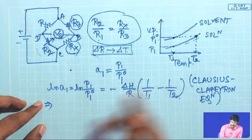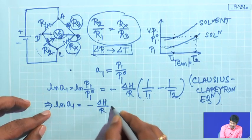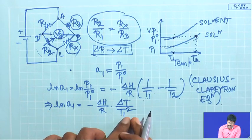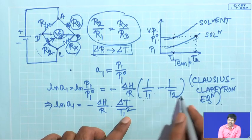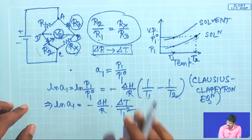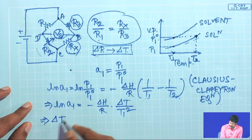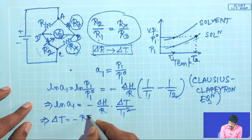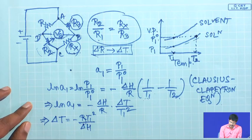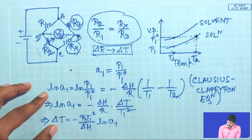So ln(A1) = -(delta_H / R) × (delta_T / T1²), since T1 × T2 ≈ T1² because T2 is very close to T1 — there is a very small temperature change. Therefore delta_T = -(R × T1²) / delta_H × ln(A1). This is an important equation.